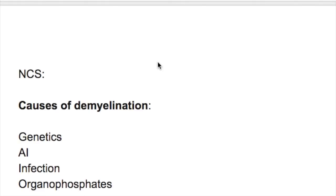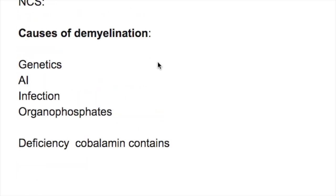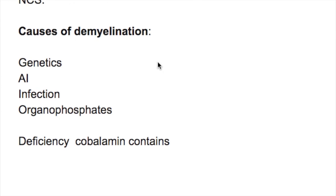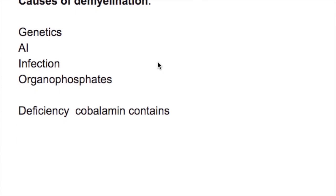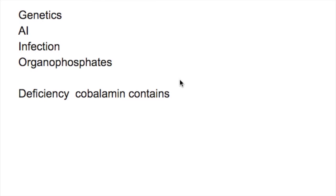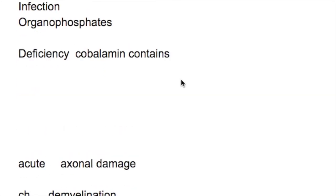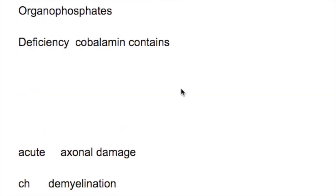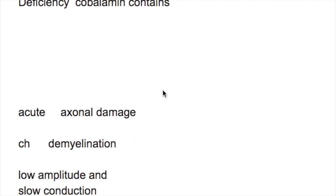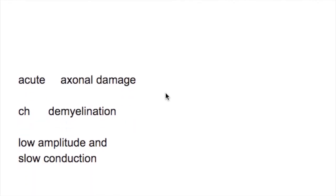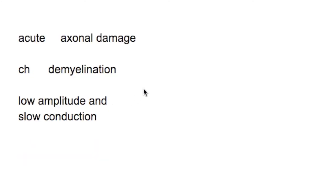Nerve conduction studies: any condition causing demyelination affects nerve conduction velocity. Causes of demyelination include genetics, autoimmune conditions, infection, organophosphates, and deficiency disorders like B12 deficiency. In acute B12 deficiency there is axonal damage, whereas in chronic B12 deficiency there is demyelination with low amplitude and slow conduction velocities.